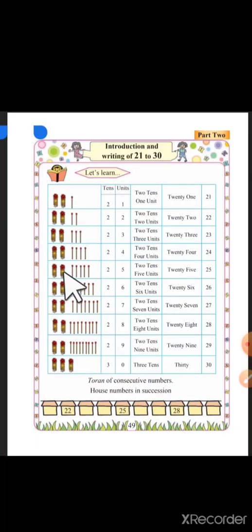2 tens makes 20 and 5 units is equal to 25. 2 tens makes 20 and 6 units makes 26. 2 tens makes 20 and 7 units makes 27.